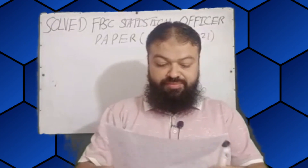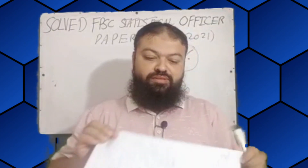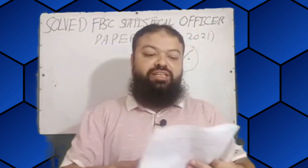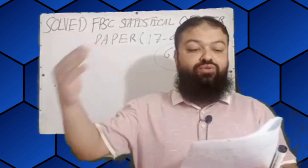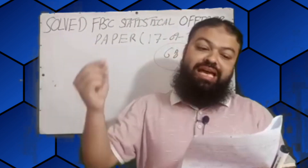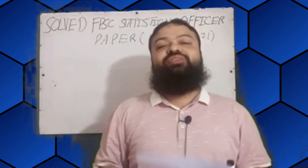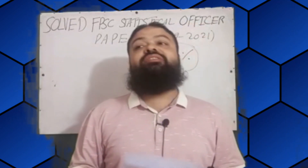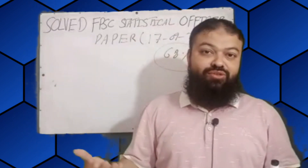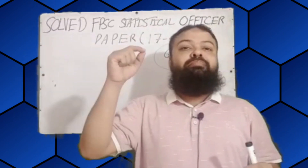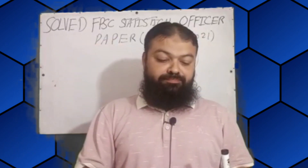Question number six: when we have many outliers in the data, which average is the most suitable one? Median is the correct option. Whenever we have many extreme or abnormal values in the data, the median is the most suitable average.